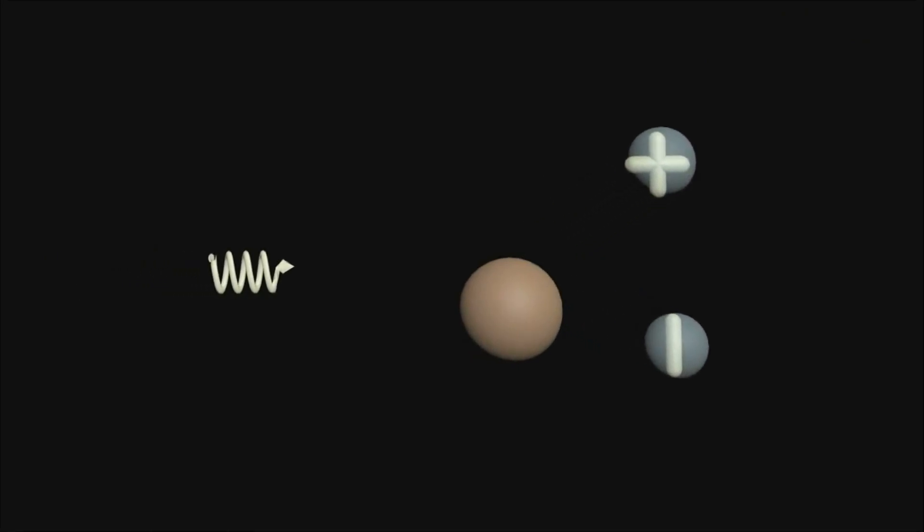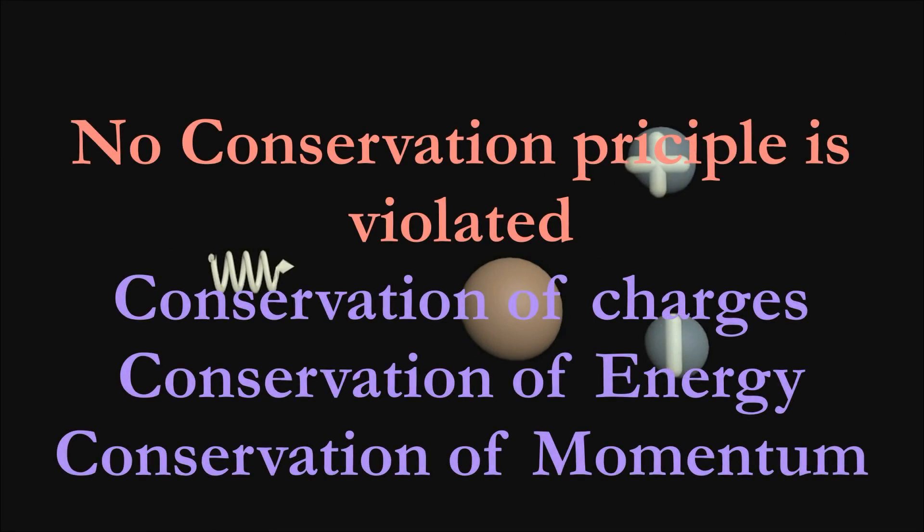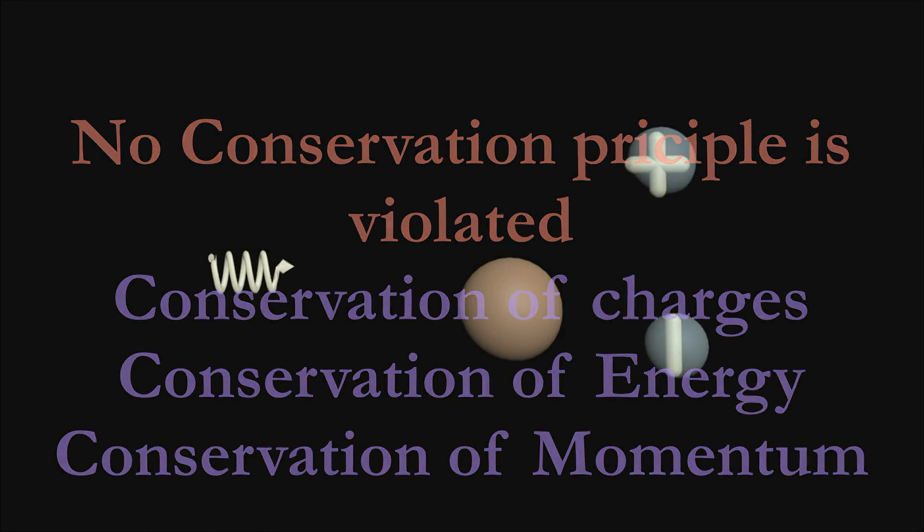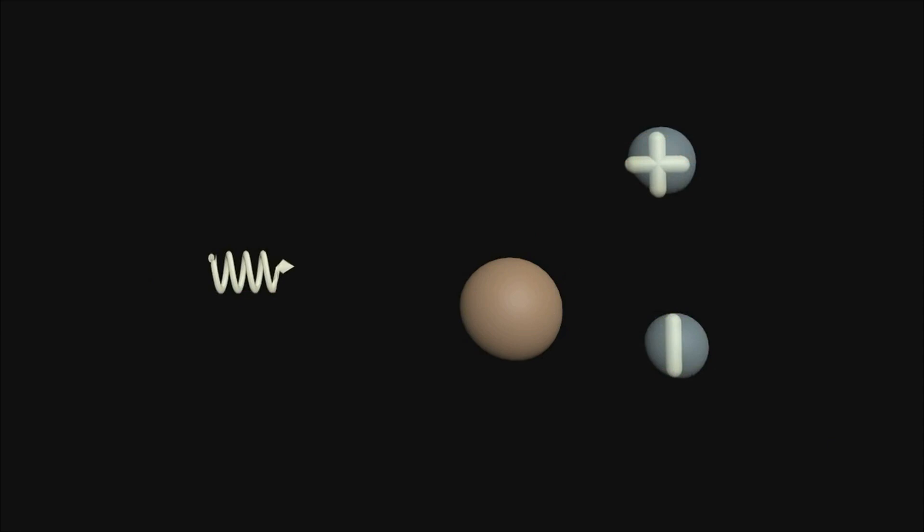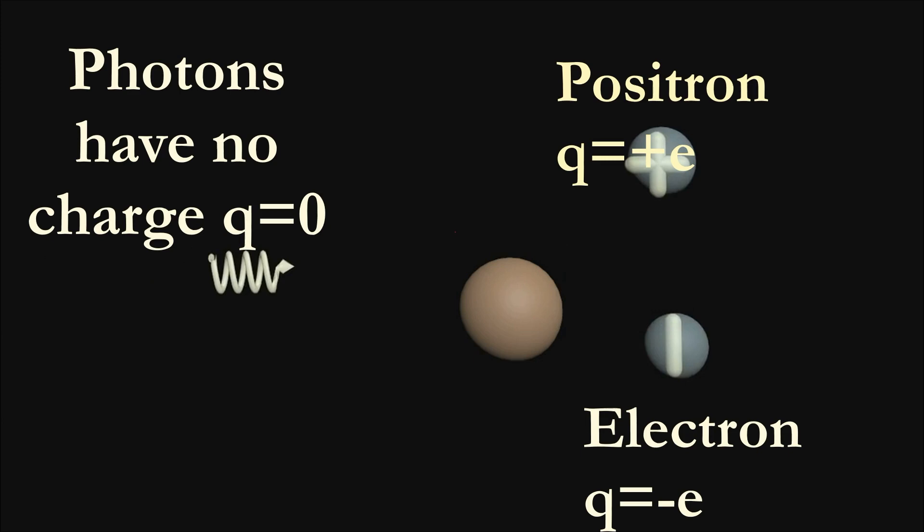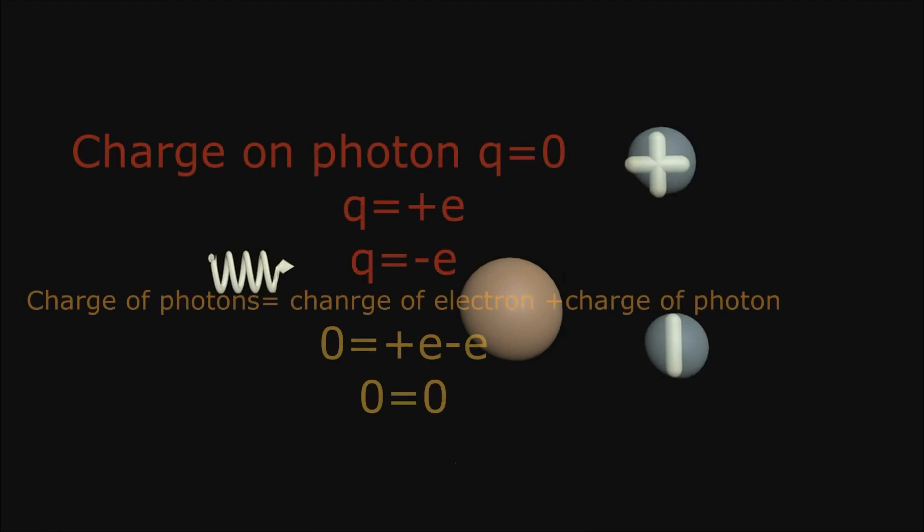No conservation principle is violated during this process. Law of conservation of charge: the sum of all charges must be conserved. In this process, the photon has no charge, the positron has positive charge, and the electron has negative charge. The sum of positron and electron charge is equal to the charge of photons, so it obeys the law of conservation of charge.